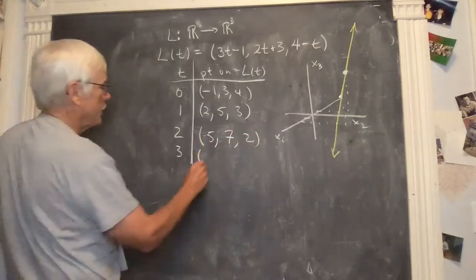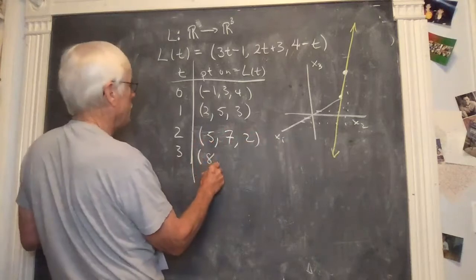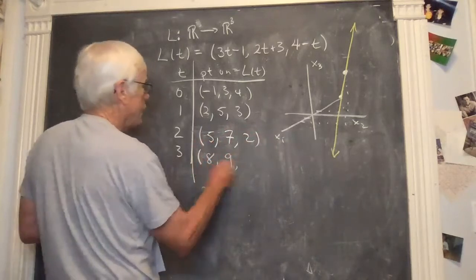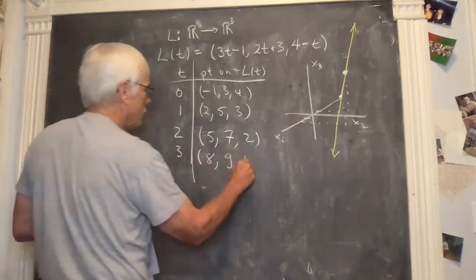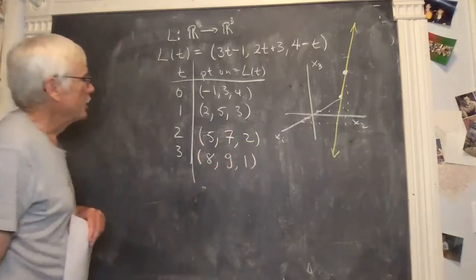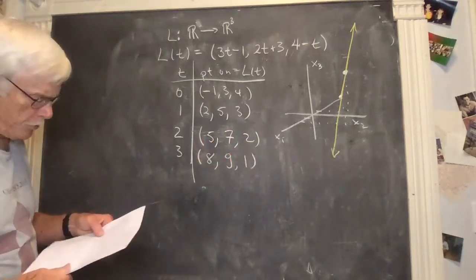And plugging in three, you get eight, six and three is nine, four minus three is one. So there is a list of four points on them.